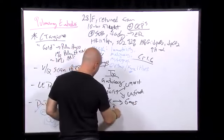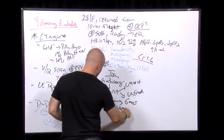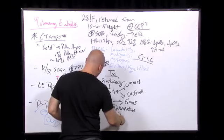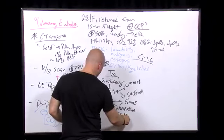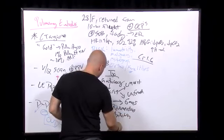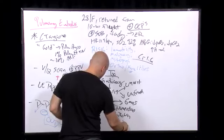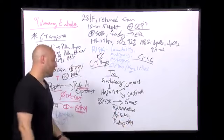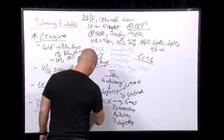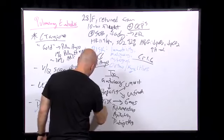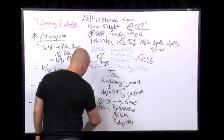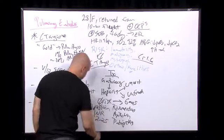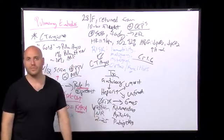Oral anticoagulation. Such as rivaroxaban. Such as apixaban. These are all direct thrombin inhibitors. Such as dabigatran. Factor Xa inhibitor. Right? And of course, traditional warfarin is still there. But of course, you have to follow an INR and keep the INR between 2 and 2.5 or in 2. Okay?